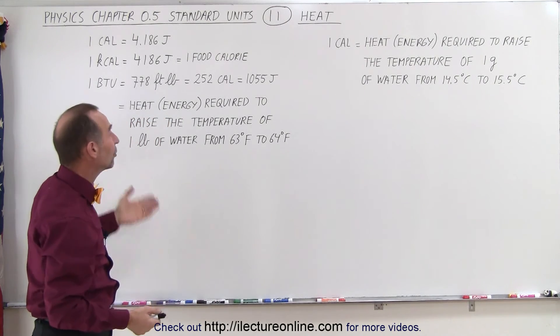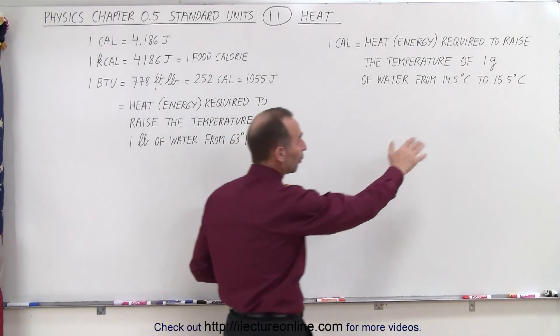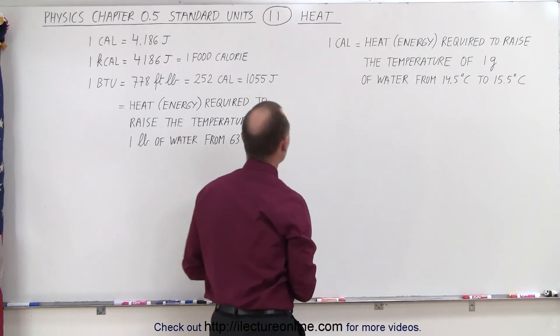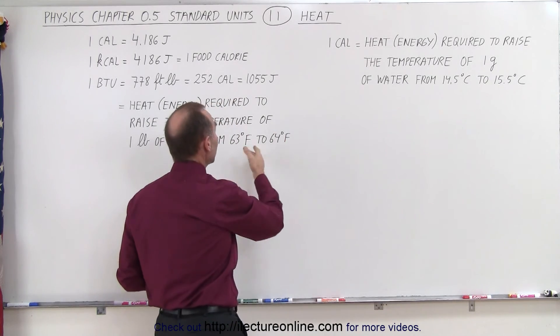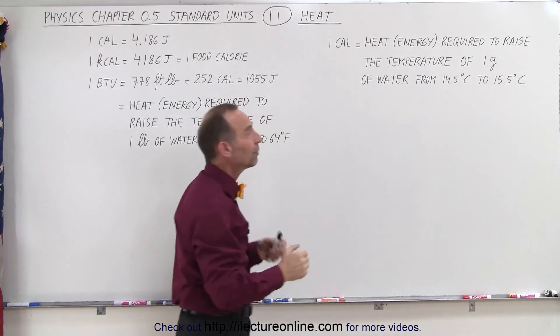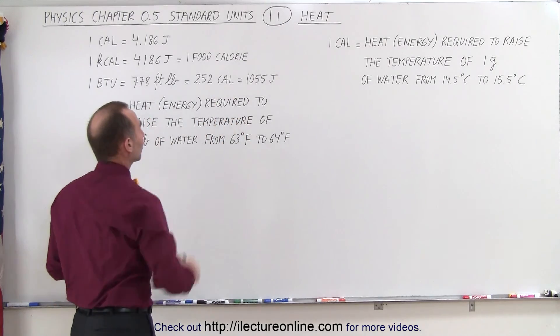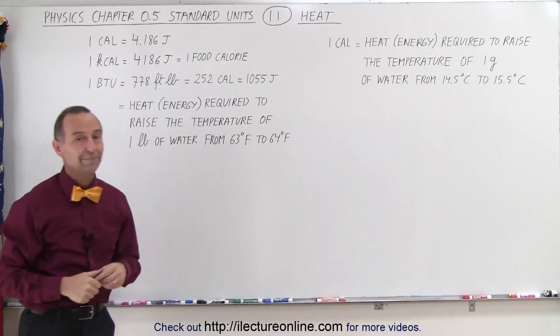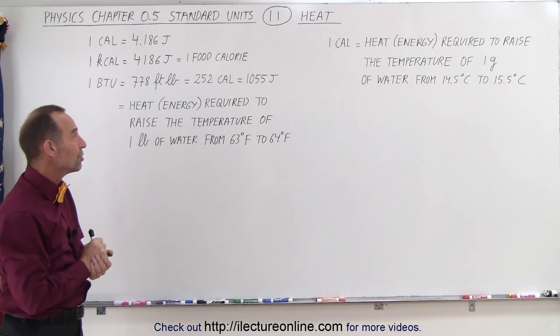A pound is roughly equivalent to about 454 grams, and a Fahrenheit degree is roughly half a Celsius degree, so you can see that it would require about a thousand joules to accomplish that. That's what we mean by a BTU.